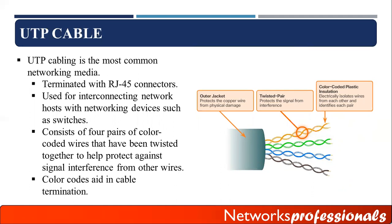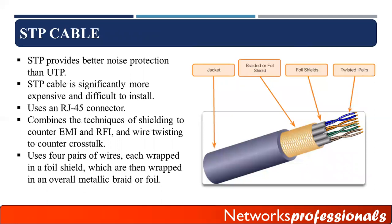UTP cable is used for interconnecting network hosts with networking devices such as switches. It consists of four pairs of color-coded wires twisted together to help protect against signal interference from other wires, i.e., crosstalk. Color codes aid in cable termination. STP cable provides better noise protection than UTP but is significantly more expensive and difficult to install. STP also uses the RJ45 connector, with extra shielding or magnetic coating inside to protect against EMI or RFI.